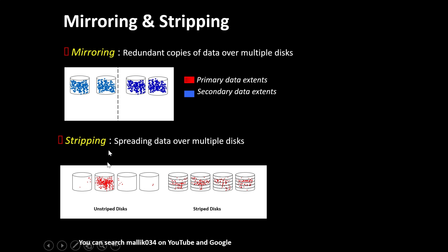Striping: comparing unstriped versus striped disks across four disks (A, B, C, D). In the unstriped case, all your data resides on disk B. Whenever a database IO request comes, it always accesses disk B — making it a 'hot disk' — while disks A, C, and D sit mostly idle with minimal IO. You're not making optimal use of your disks, which is not advisable.